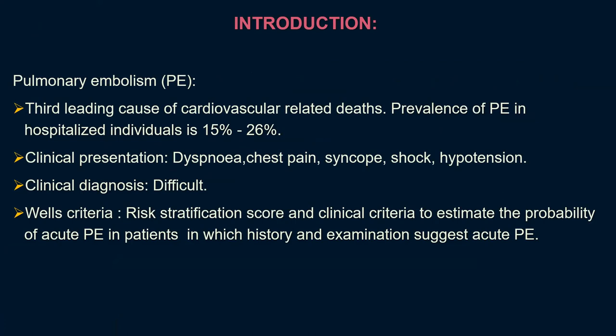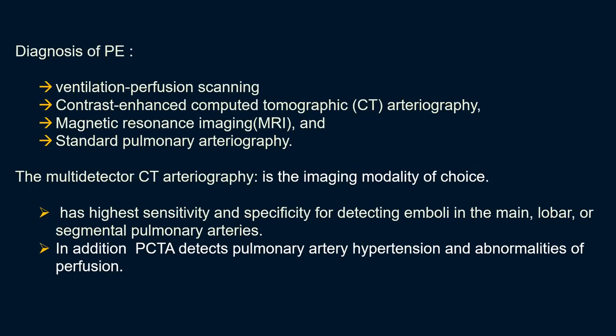There is Wells' criteria, which helps us to assess risk stratification based on clinical symptoms in patients probably with acute pulmonary embolism, for which history and examination is necessary. Diagnosis of pulmonary embolism includes ventilation-perfusion scanning, contrast-enhanced CT arteriography, MR imaging, and standard pulmonary arteriography. The multi-detector CT arteriography is the imaging modality of choice and has the highest sensitivity and specificity for detecting emboli in the main, lobar, and segmental pulmonary arteries. In addition, it can also detect pulmonary arterial hypertension and abnormalities of perfusion.